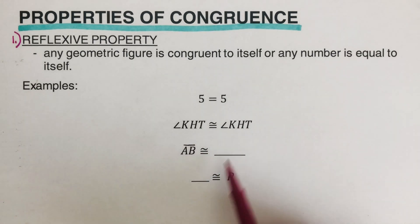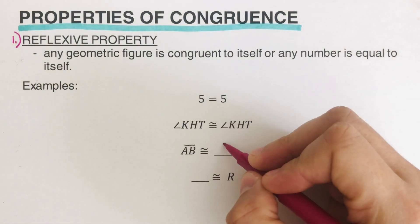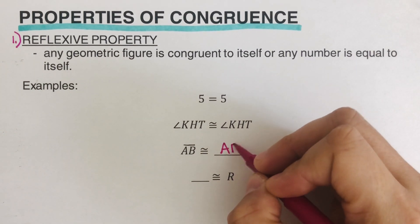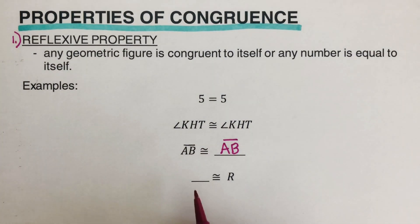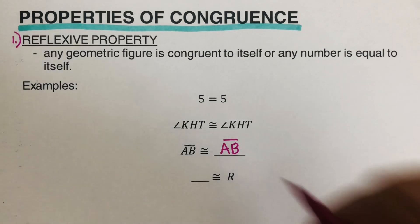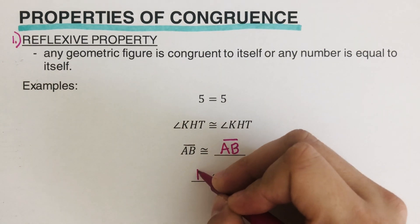At this time, please try this one out on your own. Okay, what did you have for this? Good, it's AB. So line segment AB is congruent to AB. What did you have for the other one right here? R. R is congruent to R.